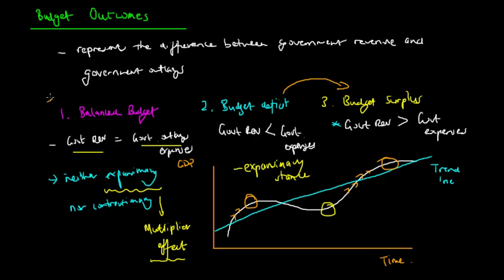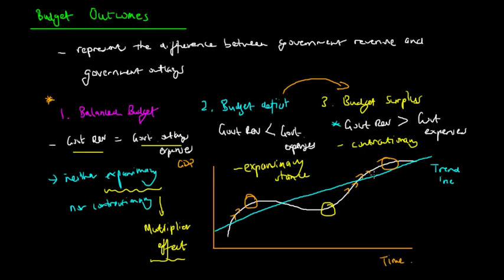So in very rare cases will the government experience a balanced budget where government revenue exactly equals government expenses. But in most cases we're going to look at budget deficits and budget surpluses, with a budget deficit being an expansionary stance and a budget surplus being typically contractionary in nature.